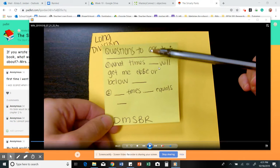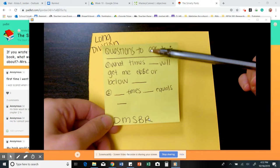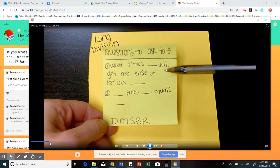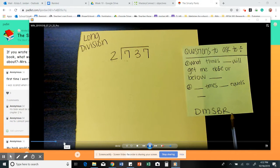So the first question is what times blank will get me close to or below blank. The second question, after you ask this and answer it, you will say what? That number times the other number equals what? Now, these letters down here stand for divide, multiply, subtract, bring down, and remainder. The remainder is at the very, very, very, very end of your problem when you don't have any more numbers to bring down, and you have no holes in your roof. That is when you use it. And you will probably use your sticky note so much that it will be so stuck in your brain you don't even need to use it anymore.